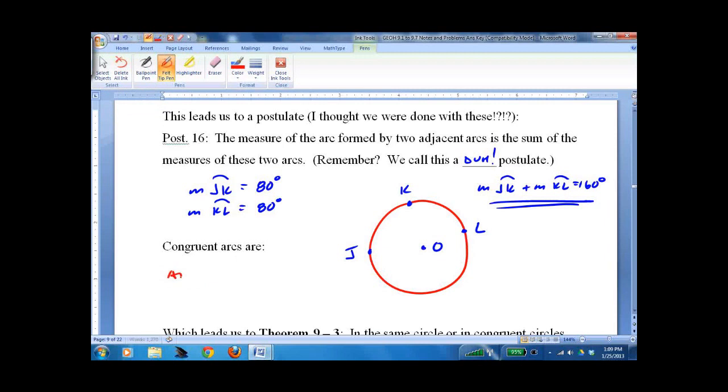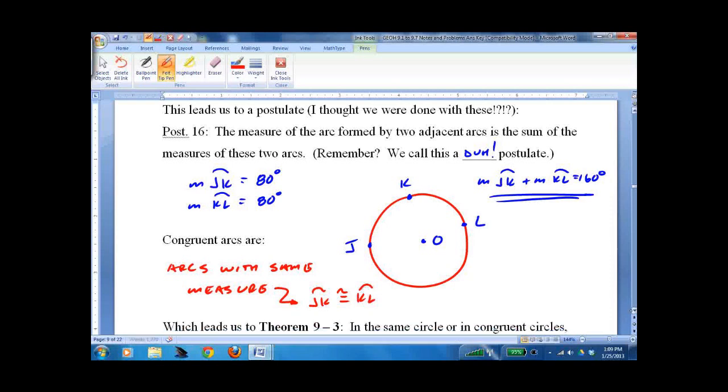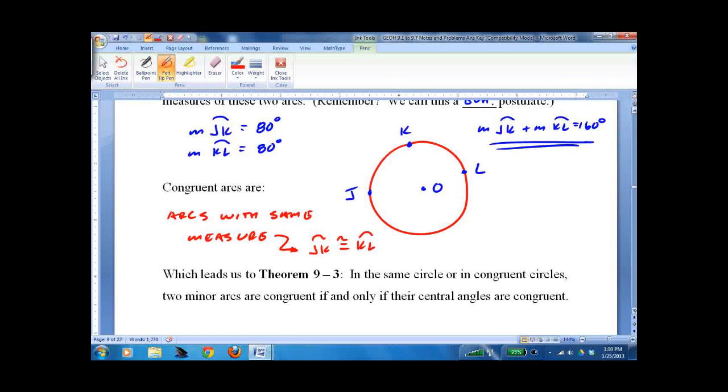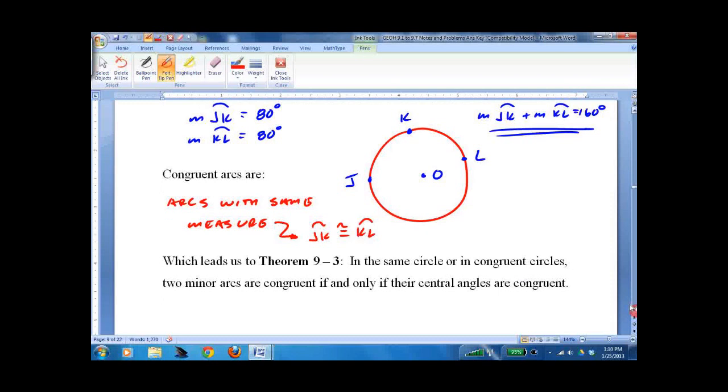Congruent arcs are arcs with the same measure. And remember, if we're going to say they're congruent, we don't have the measure. We say JK is congruent to KL. We could also say measure of JK is equal to measure of KL. But if we're going to say congruent, then we talk about the arcs. If we're going to say equal, we talk about their measure.